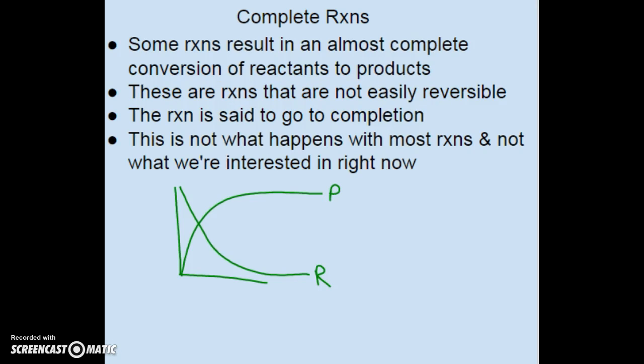Some reactions result in almost complete conversion of reactants to products — these are complete reactions. Frying an egg is an example: we can't reverse it. The reaction is said to go to completion. On a graph, the product concentration gets very high and the reactant concentration approaches zero, rather than leveling off at some value greater than zero.